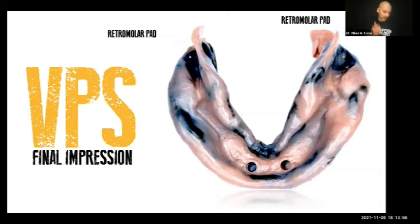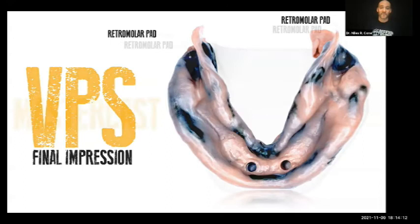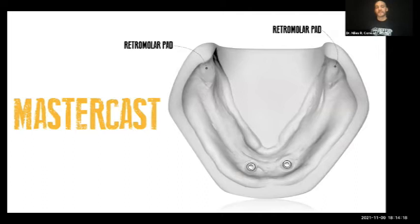What I do most of the time now is just use alginate to make my final impression for both arches. When I pour this up, I've maintained the retromolar pad — you can see that almond-shaped pad back there where the third molars were. That retromolar pad is the primary area of support for a mandibular denture, along with the external oblique ridge running along the buccal vestibule.